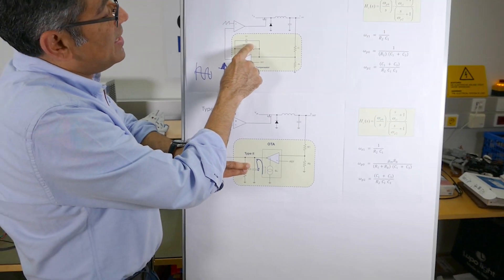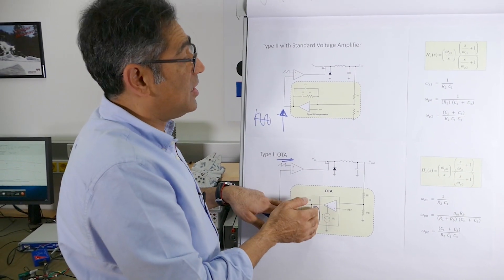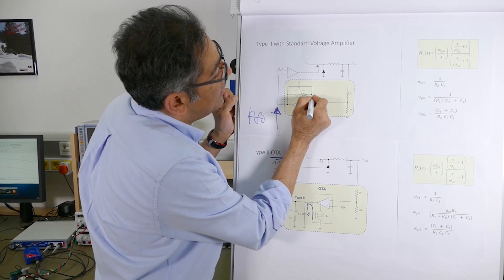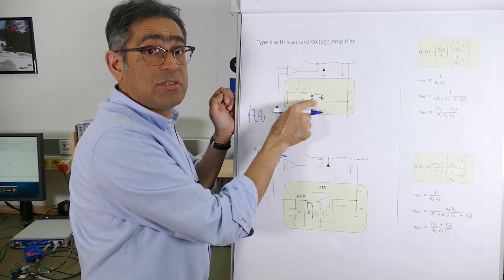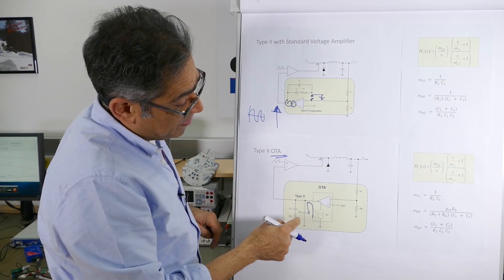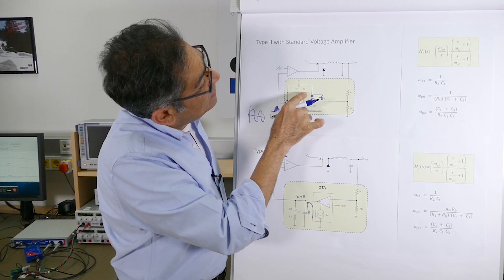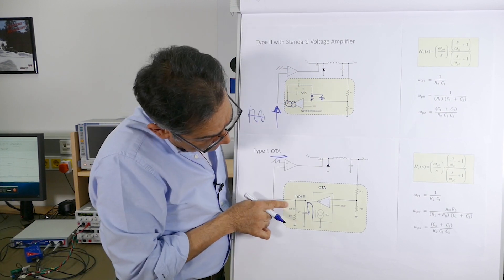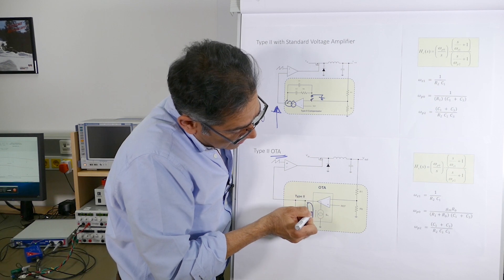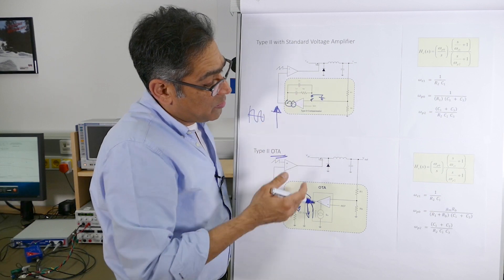Now if you look at the compensation components here, all we have to do in order to design a type 2 compensator with a transconductance amplifier is to take these components and break this point here and tie them to ground, assuming that this was a current source. And that gives you an operational transconductance amplifier. So I have here a current source, a capacitor, a resistor in parallel with another capacitor — this is exactly the same — and what is happening is that the current source on the output of this amplifier is pushing current down there, and therefore the frequency response of these two is identical.